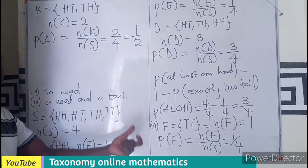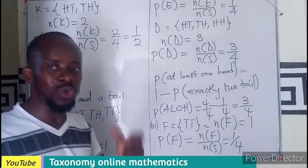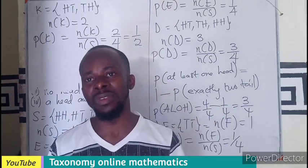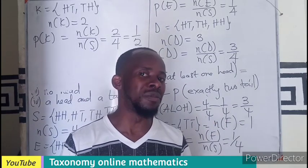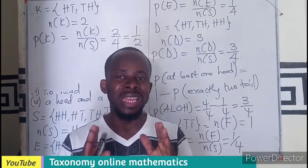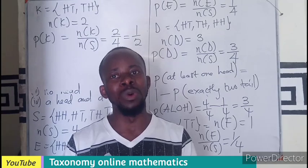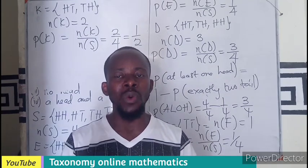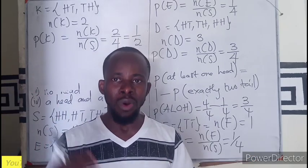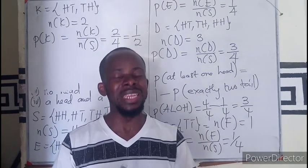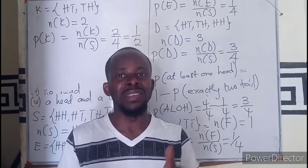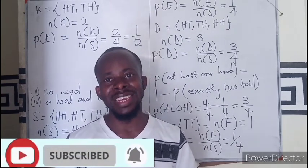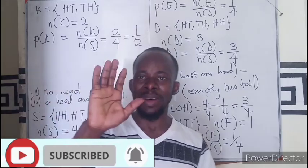So those are the probabilities we can find when tossing a coin twice. We listed the sample space and can also use a tree diagram to find it, as covered in the previous episode. In the next episode, we'll solve questions on tossing a coin three times and also tossing a coin and a die simultaneously. Thank you for watching — like, share, and comment. Bye!